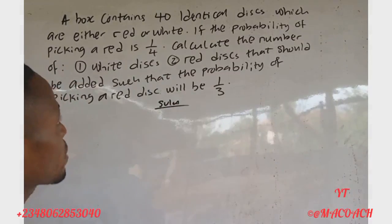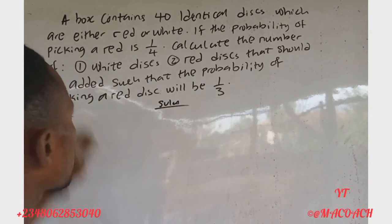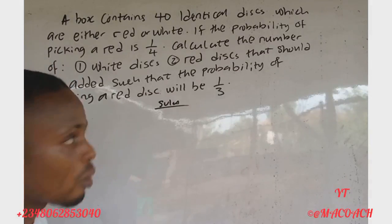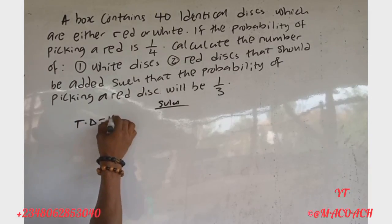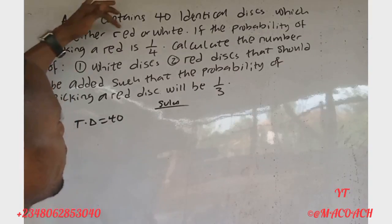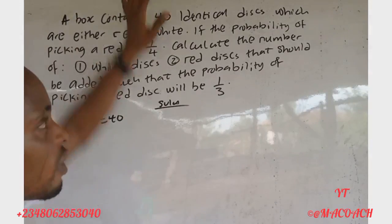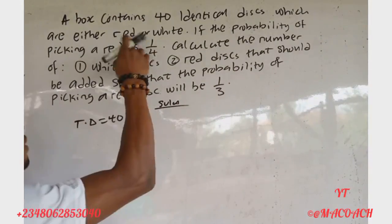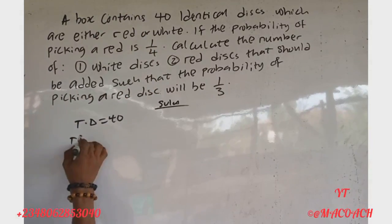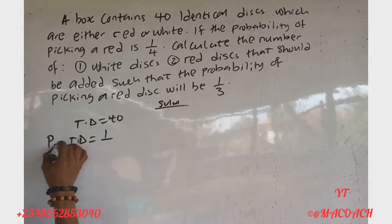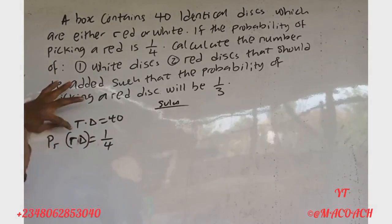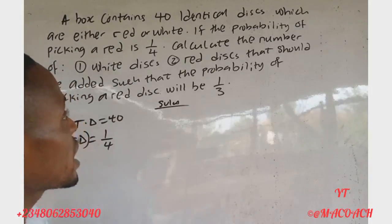Let's write out our data. The bag contains 40 identical disks, so the total number of disks (TD) is 40. The disks are either red or white, and the total is 40. The probability of picking a red disk is given as one over four. So: probability of red disk (P(RD)) = 1/4.